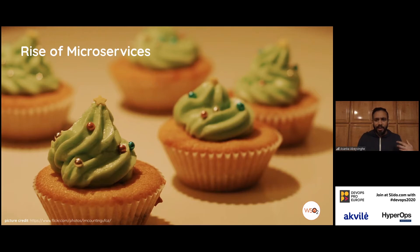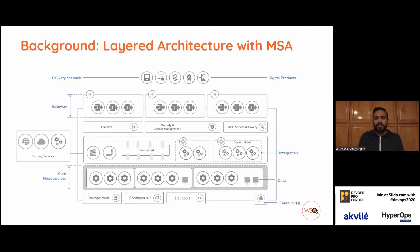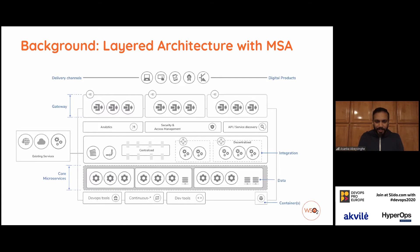At the same time, microservices came into the picture. We identified that even though there was a lot of theory behind microservices, people who pioneered them — Netflix, Uber, eBay — introduced another layer on top of the core microservices. Netflix used to call it APIs, Uber called them edge gateways, eBay used this nice API facade pattern, and even Gartner introduced a concept called mini services running on top of microservices. If you looked at an architecture diagram during that era, the microservices became just another layer in the same layered architecture. So we didn't actually move out from the layered architecture pattern.